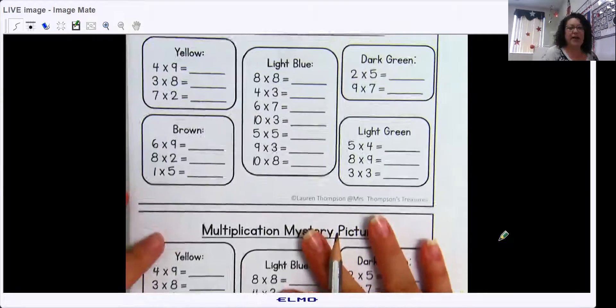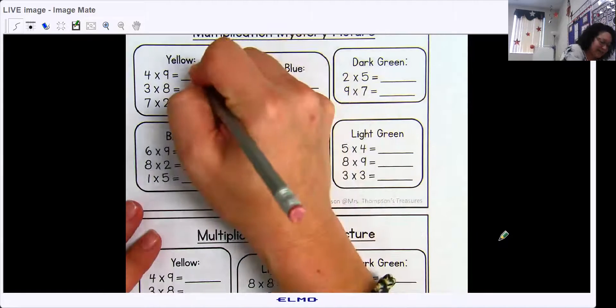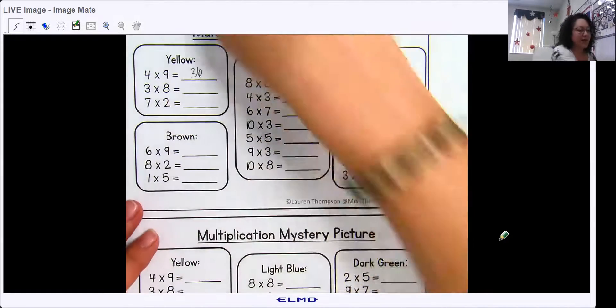Nine times four is 36. And you'll solve the rest of them.